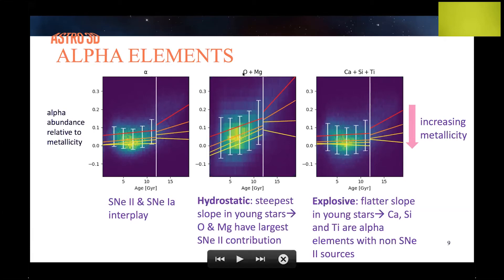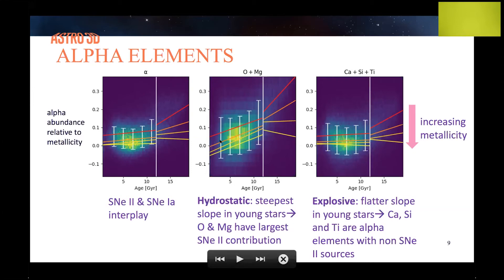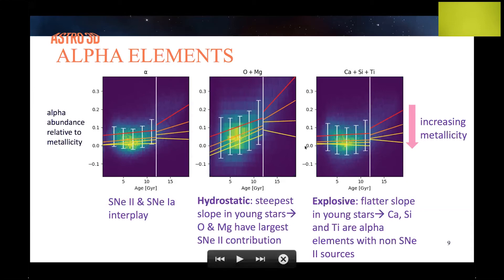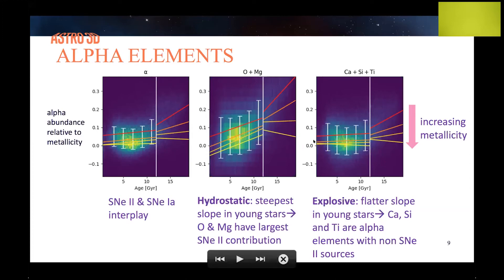We can even break down two different types within alpha elements. The first are the hydrostatic alpha elements — oxygen and magnesium — which are purer alpha elements because most are produced in type II supernovae. In the recent galaxy we see a dramatic decrease over time, indicating type Ia supernovae becoming more dominant and producing more iron. On the other hand, the explosive alpha elements — calcium, silicon, titanium — are not pure alpha because they are contaminated by other nucleosynthetic sources. Their trend is relatively flat in the recent galaxy, telling us the nucleosynthetic pathway is not purely alpha-like.